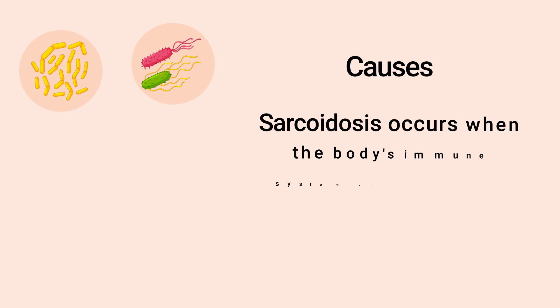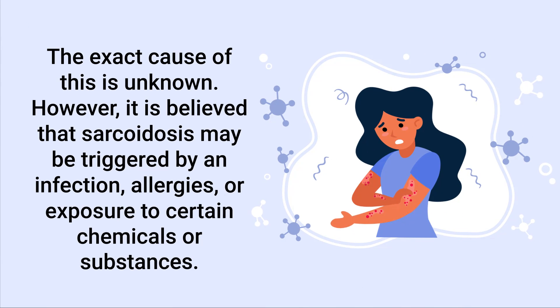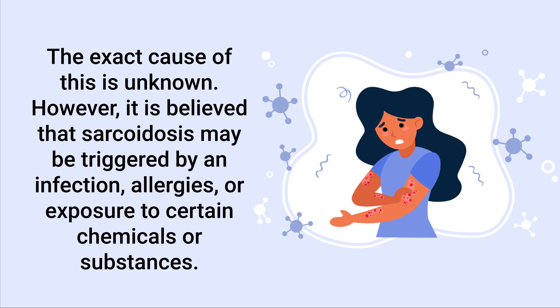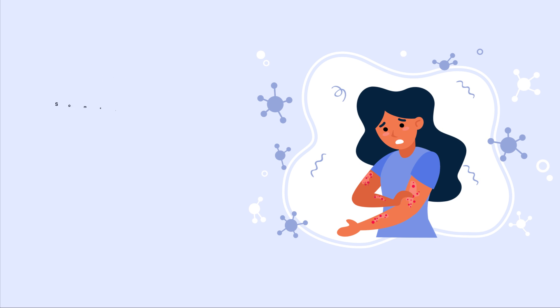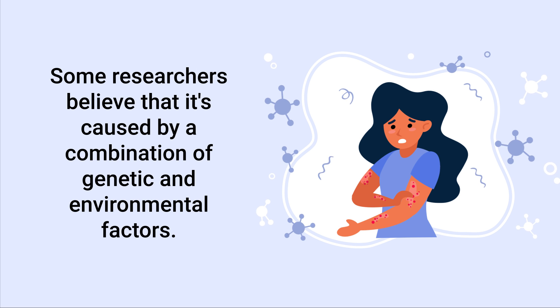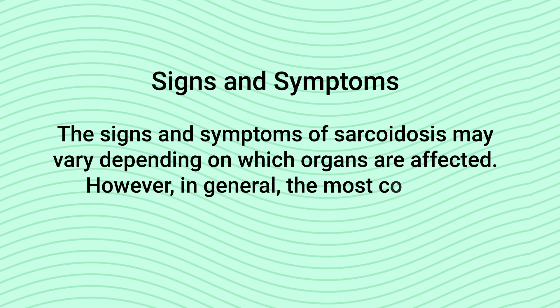First, let's talk about the causes. Sarcoidosis occurs when the body's immune system overreacts and begins to attack its own cells and tissues. The exact cause is unknown; however, it is believed that sarcoidosis may be triggered by an infection, allergies, or exposure to certain chemicals or substances. Some researchers believe it is caused by a combination of genetic and environmental factors.